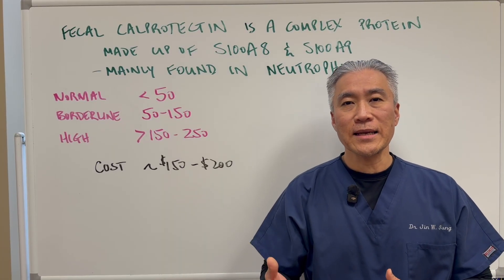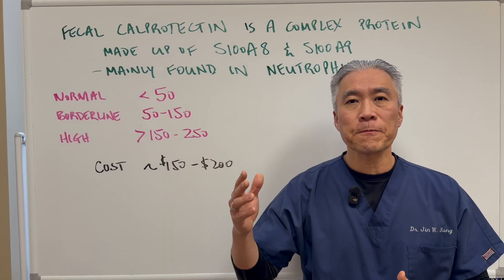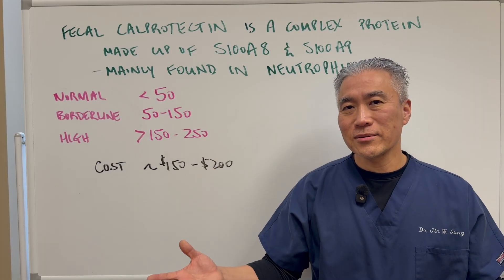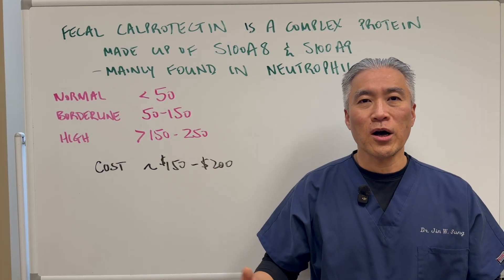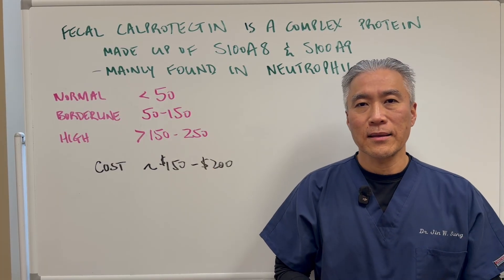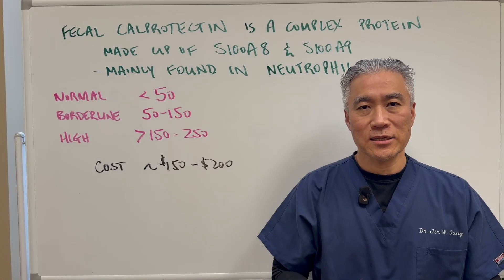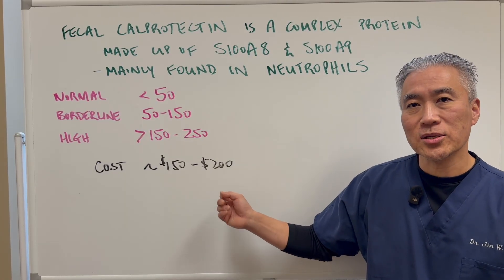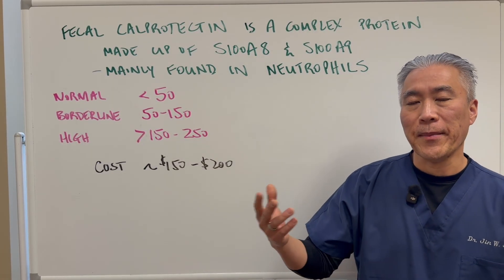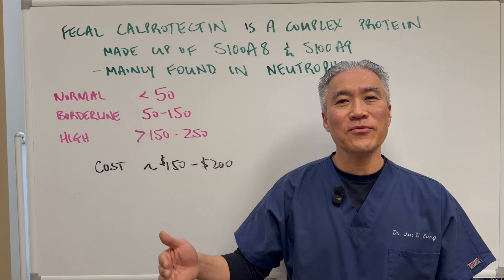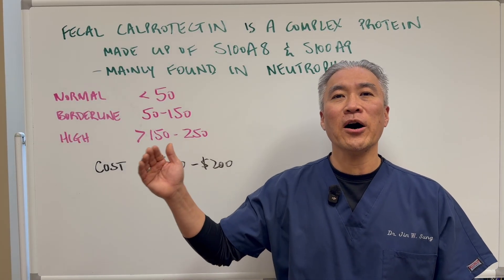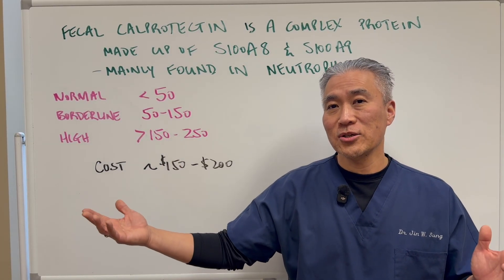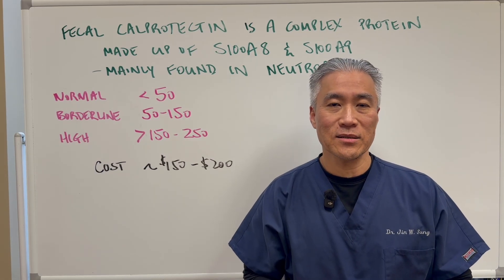This young lady I mentioned in the beginning went to doctor after doctor, and they told her nothing was really wrong — just take more fiber, take an antacid, etc. We did the calprotectin test on a GI map and it showed an elevation up in the hundreds. And later on, she got diagnosed with Crohn's disease.